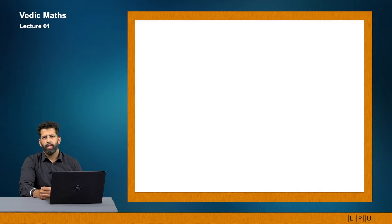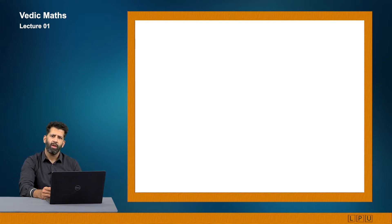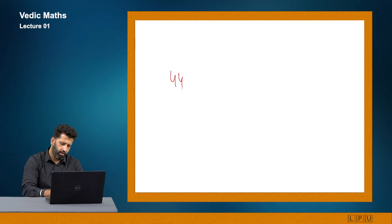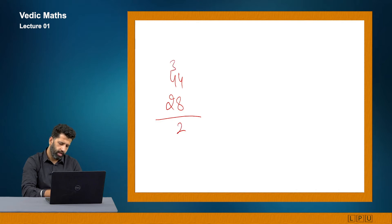The most important and most tedious calculation we come across in maths is multiplication. When we were doing multiplication in school, we were taught a specific way which we can call the traditional method. For example, if I want to multiply 44 with 28, I will first multiply 8 with 44. 8×4 gives 32, write 2 carry 3; 8×4 again 32 plus 5 gives 35, so I get 352 then 88, giving me 1232 as my answer.